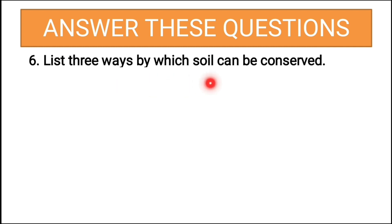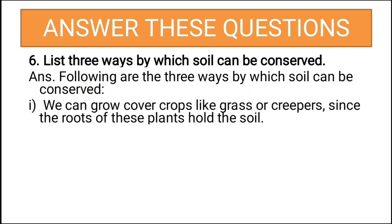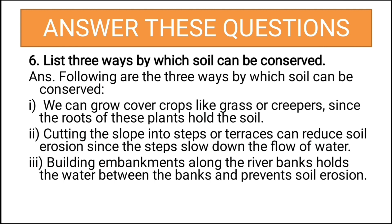List the three ways by which soil can be conserved. First, we can grow cover crops like grass or creepers, since the roots of these plants hold the soil. Second, we can cut slopes into steps or terraces, which reduces soil erosion by slowing down the flow of water. Third, building embankments along river banks holds the water between the banks and prevents soil erosion.